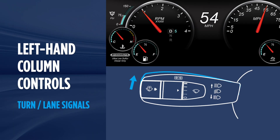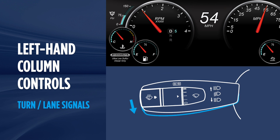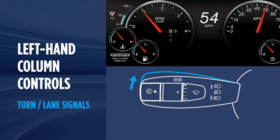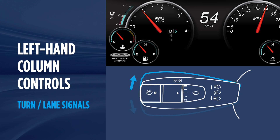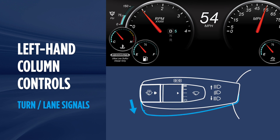To signal a lane change, bump the column control up for right or down for left without locking the control into position. This will initiate a signal for several seconds, allowing for typical lane change maneuvers.